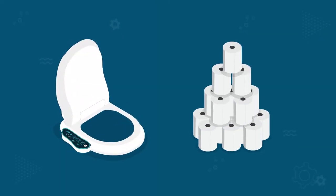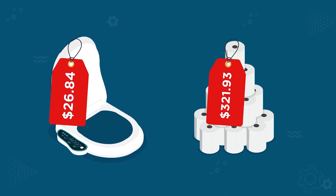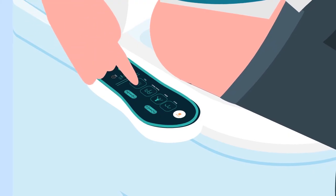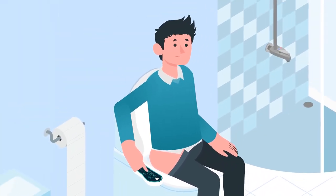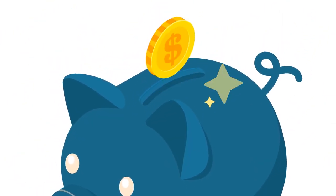A bidet toilet seat costs less than $30 a year to operate, compared to the more than $300 spent on toilet paper for Ed's household. After considering the benefits of a bidet, Ed has made the choice to move away from paper and embrace a more environmentally friendly lifestyle.